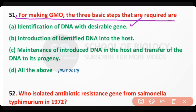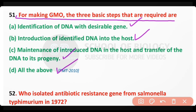Question number 51. For making genetically modified organisms, the required steps include: introduction of identified DNA into the host, maintenance of introduced DNA into the host, and transfer of DNA to its progeny. The correct answer is option D — all three steps are required.